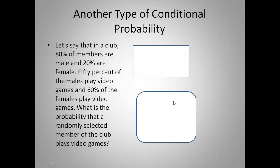Let's say that in a club, 80% of the members are male and 20% are female. This box represents the club members — over here I have males and females: 80% are males and 20% are females.